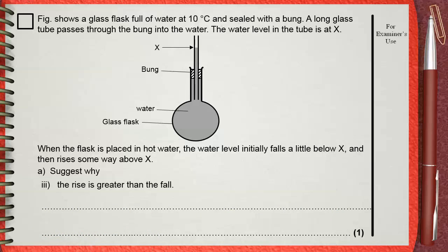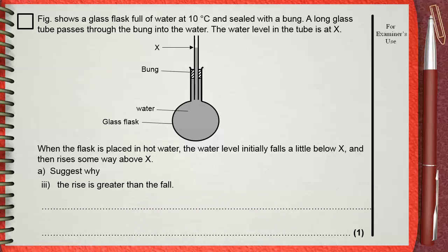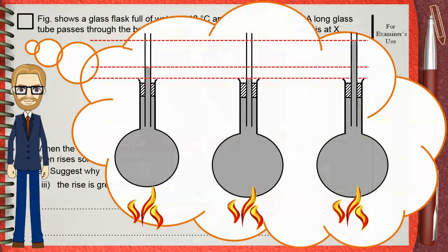Question triple I. Suggest why the rise is greater than the fall. Again, back to our example. When water level initially falls, this is the amount of falling shown by the black arrow. Then it expands more above the original level.